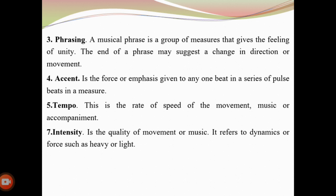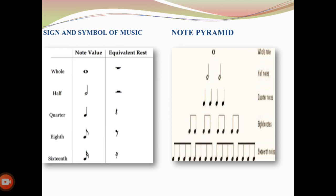In the next section, we see the signs and symbols of music, which are the whole, half, quarter, eighth, and sixteenth notes — also called the note pyramid. The notes of value and counts are also shown, including the counting and equivalent notes of rhythmic patterns. Note value is the length of time that the musician sounds a particular pitch. Note values include the quarter note, eighth note, sixteenth note, whole note, dotted note, two-quarter note (double dot), and the half note. A dot is equivalent to half the value of the note.